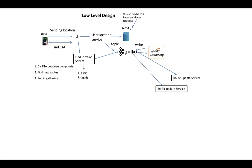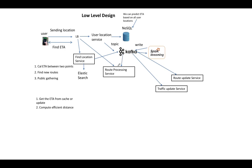Once we have the longitude and latitude of source and destination, all processing is done by the Route Processing Service. It reads from a Kafka topic to get the efficient cached route between source and destination and returns it to the user. If no route is currently present in the DB for those two points, the service computes the distance using algorithms, stores it in the DB, and returns the result to the user. That is the end-to-end processing of Google Maps.